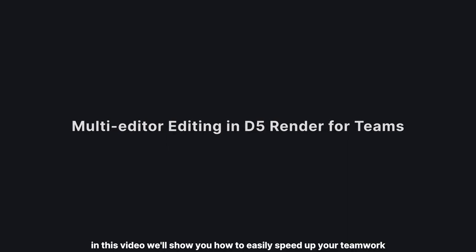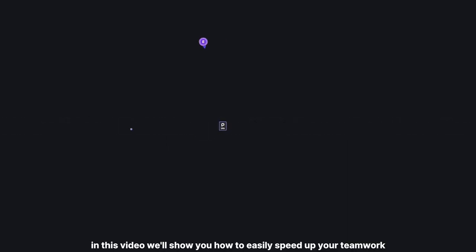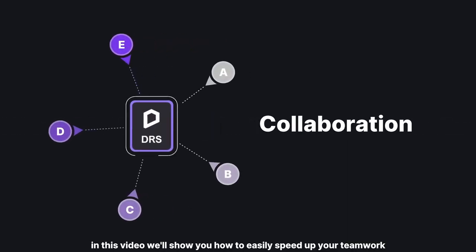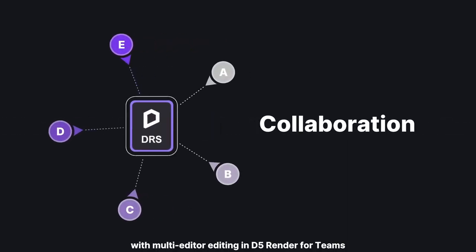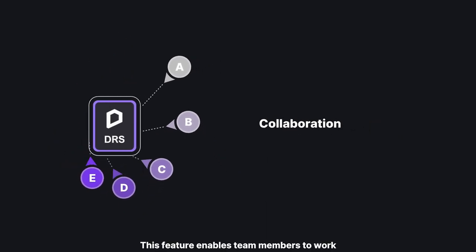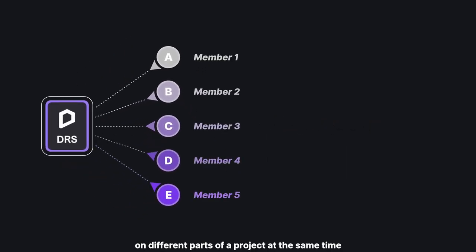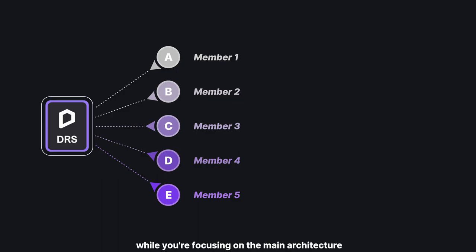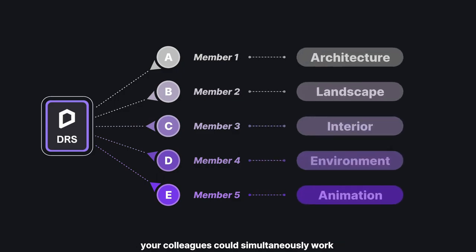Hi, in this video we'll show you how to easily speed up your teamwork with multi-editor editing in D5 Render for Teams. This feature enables team members to work on different parts of a project at the same time. For example, while you're focusing on the main architecture, your colleagues could simultaneously work on the landscapes or interiors.